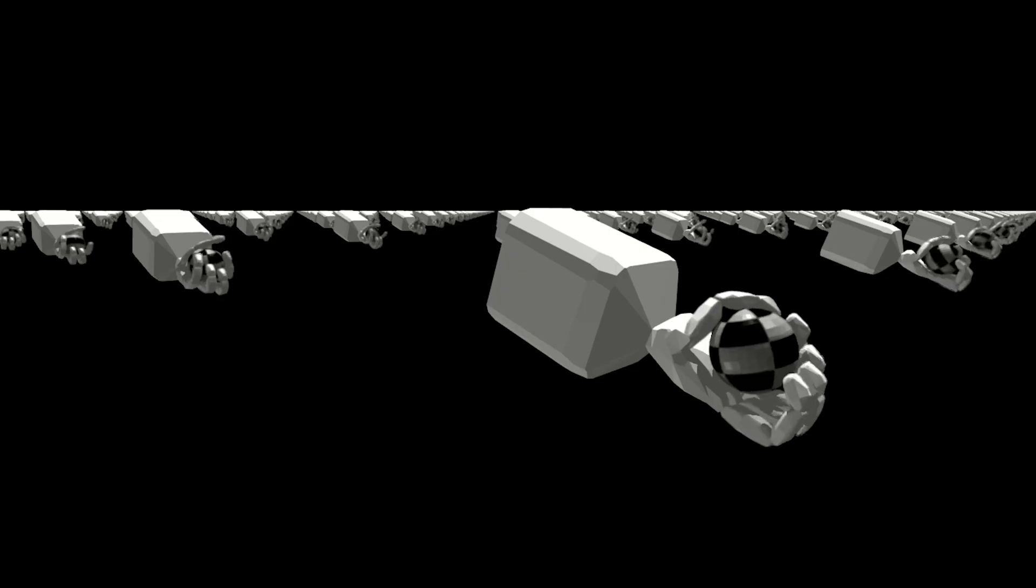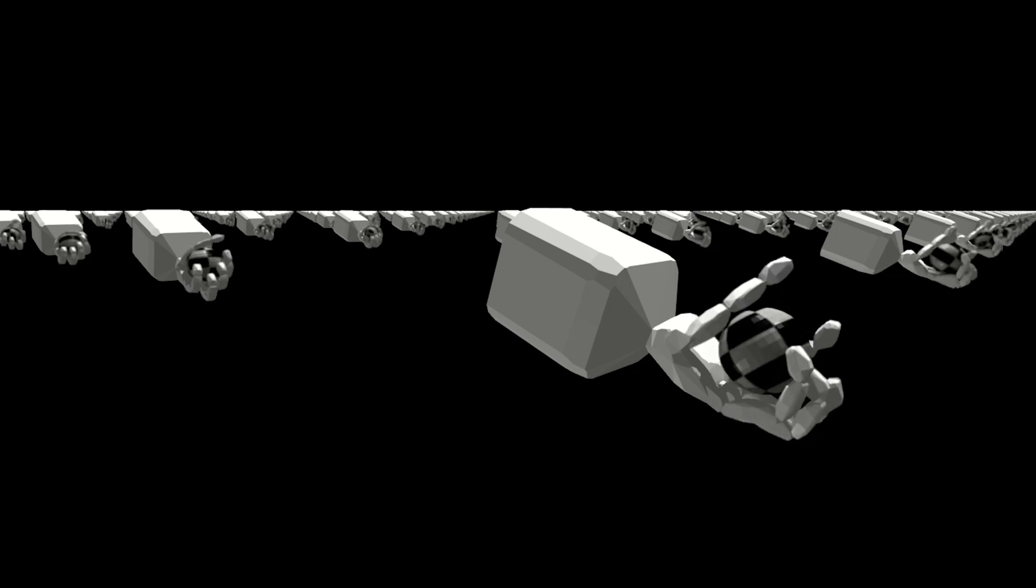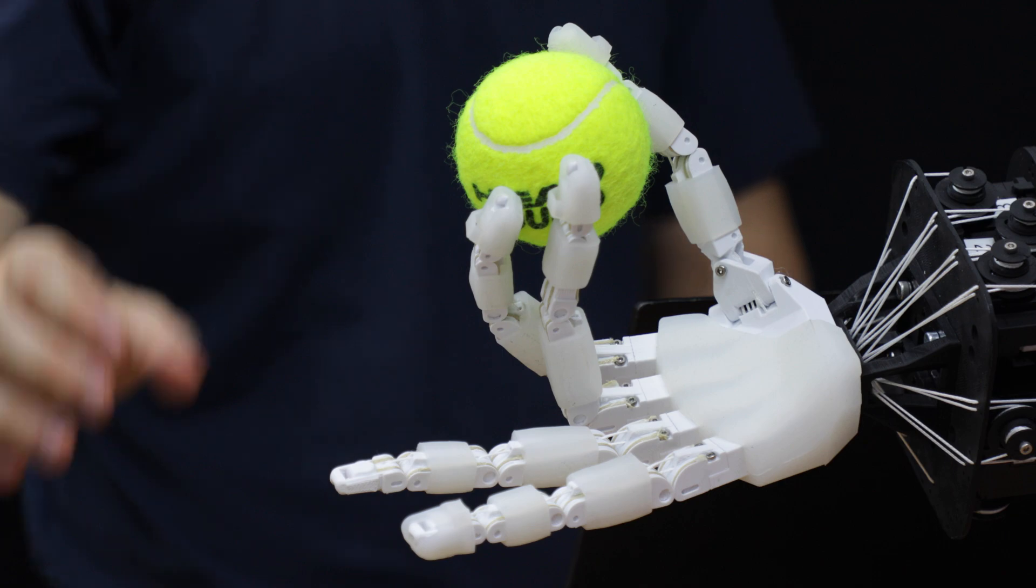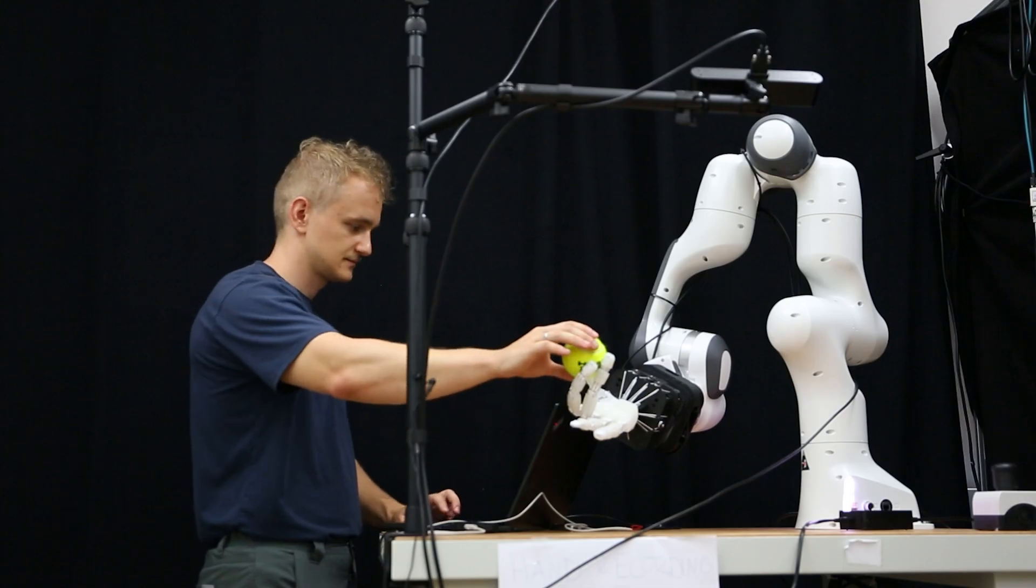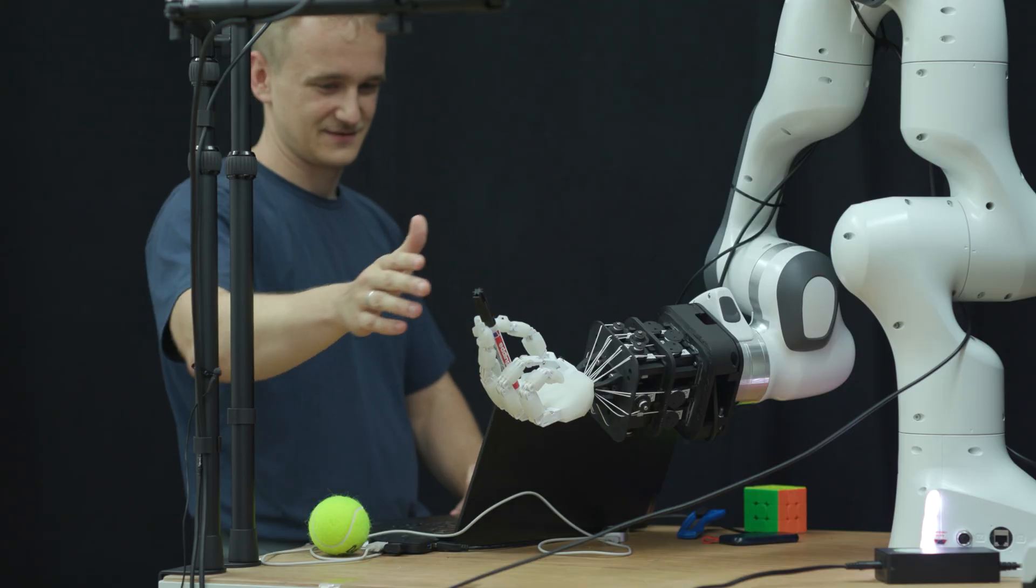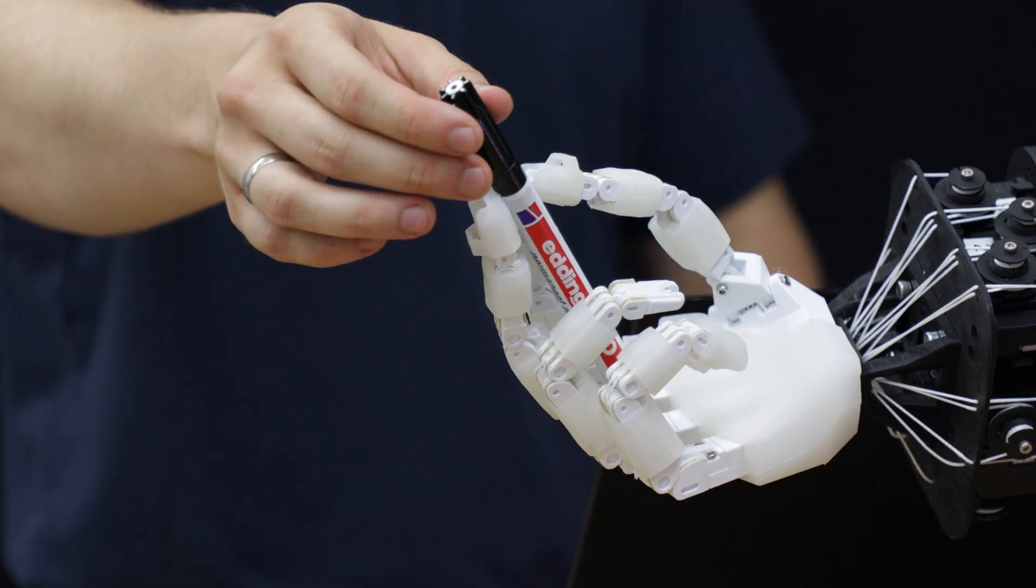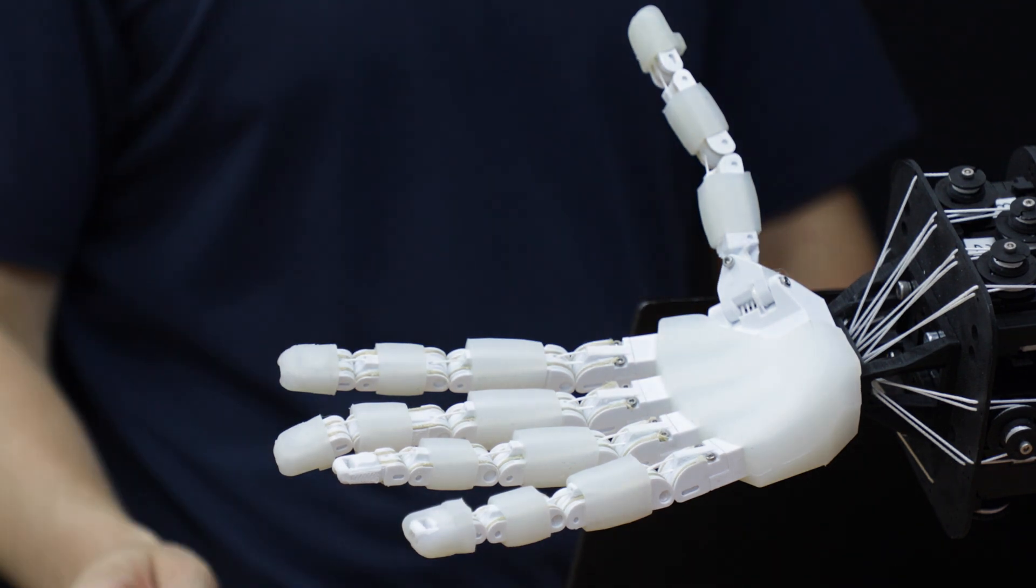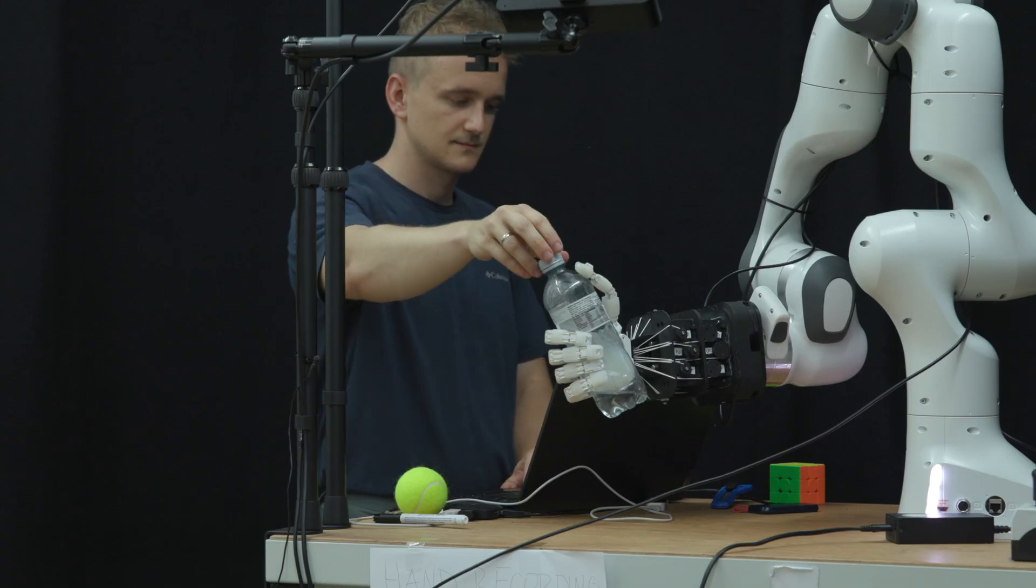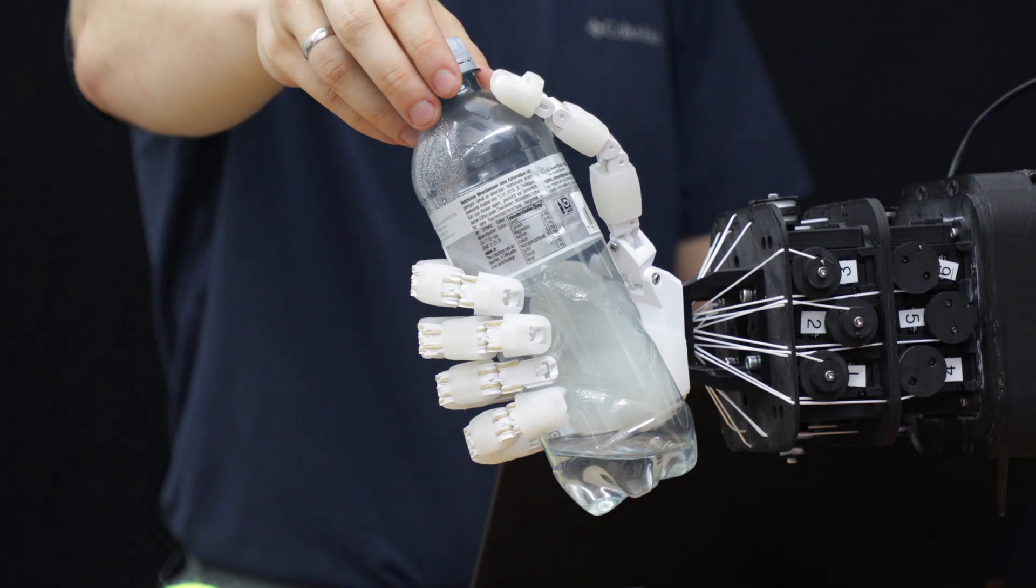When it comes to grasping motions, we want to pay attention to Cutkosky's and Feix's grasp taxonomy. They guide the robotic hand design. The categorizations are derived from human hand interactions with tools and objects. It serves as a standard to create more biometric designs for effective human-like interactions with objects.